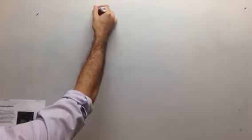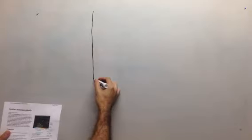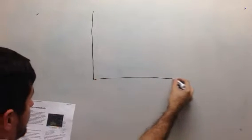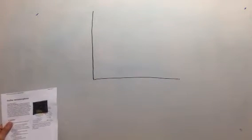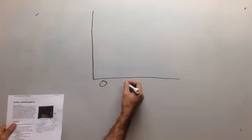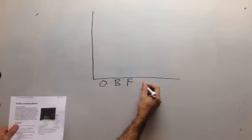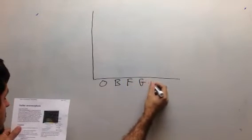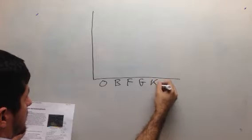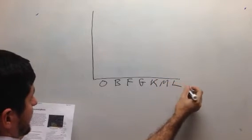What we have on the left hand side of the graph is absolute magnitude, and then we have the spectrum of the star. This would represent O, B, F, G, K, M, and L spectrum stars.